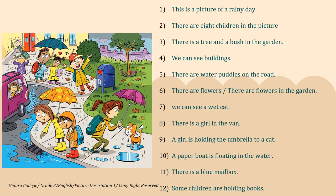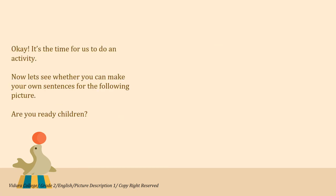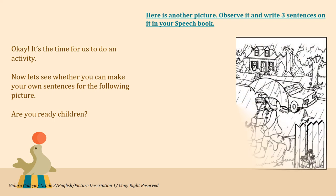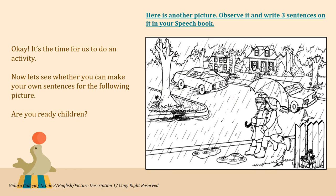You can read them again and get an idea on how to write picture descriptions. Okay, it's time for us to do an activity. Now let's see whether you can make your own sentences for the following picture. Are you ready, children? Here is another picture. Observe it and write three sentences on it in your speech book. Observe the picture carefully. Like the previous picture, you can write down the things that you can see in this picture, then start to make up the three sentences.